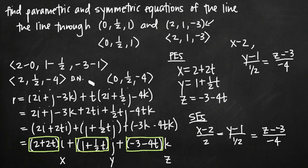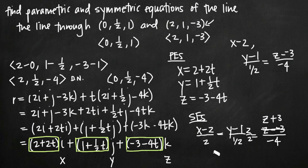But in this case, none of our direction numbers are zero, so we set all three equations equal to one another. Simplifying: z minus negative 3 becomes z + 3 to eliminate the double negative. For the 1/2 in the denominator, we multiply by 2/2 so the denominator becomes 1, giving us 2y - 2. Our final symmetric equations are: (x - 2)/2 = 2y - 2 = (z + 3)/(-4). And that's how you find parametric and symmetric equations for a line passing through two coordinate points.